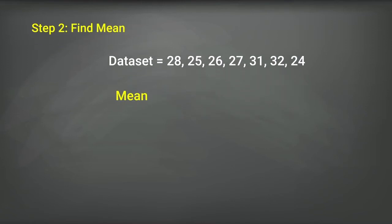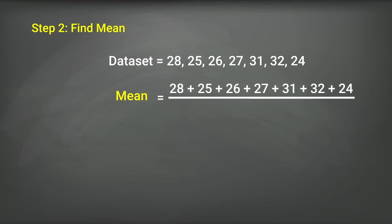The mean is 28 plus 25 plus 26 plus 27 plus 31 plus 32 plus 24 divided by 7, equals 193 divided by 7, equals 27.57.